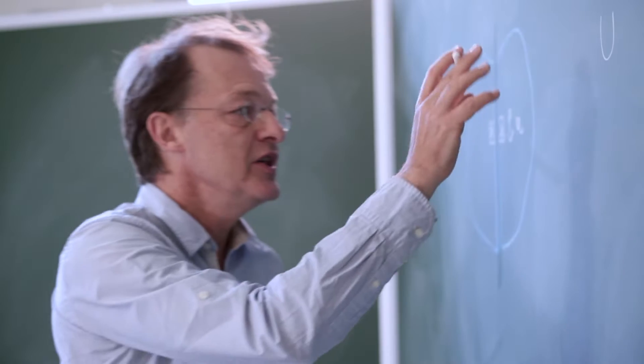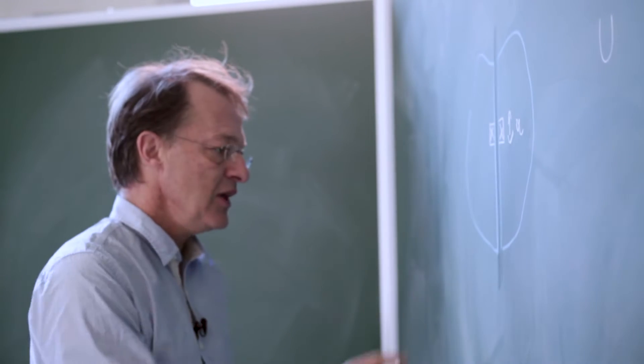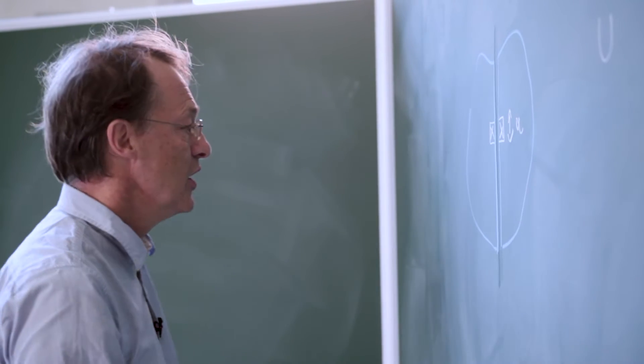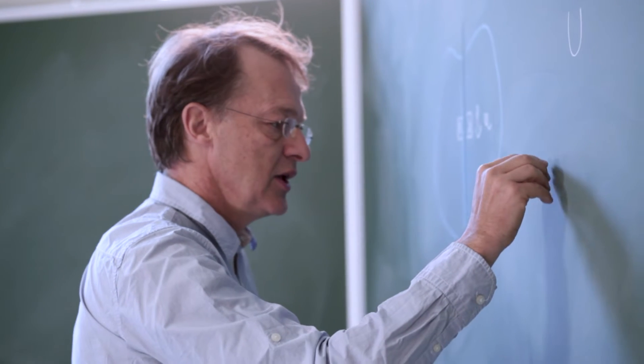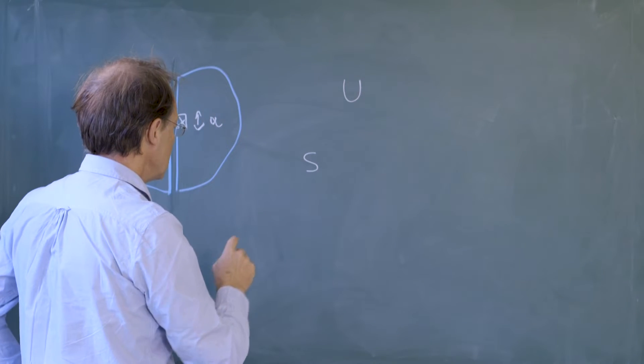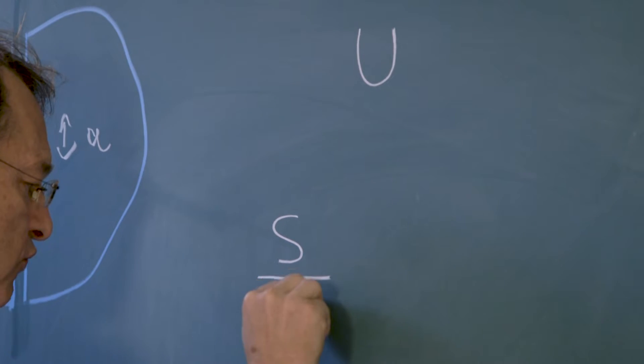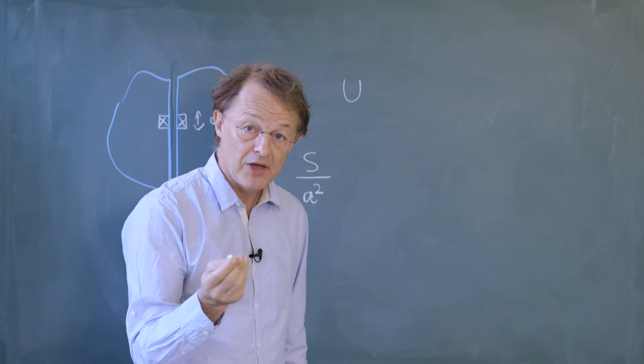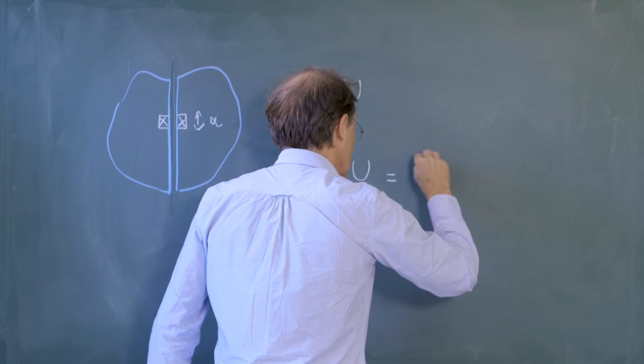U is the energy of molecular cohesion of our liquid. If we want to calculate the total energy necessary to make the divide, we need to count the number of molecules that were separated. If the surface area of each surface which was created is S, then the total number is S over A squared. And we just have to multiply by U to get the total energy necessary to make the cut.